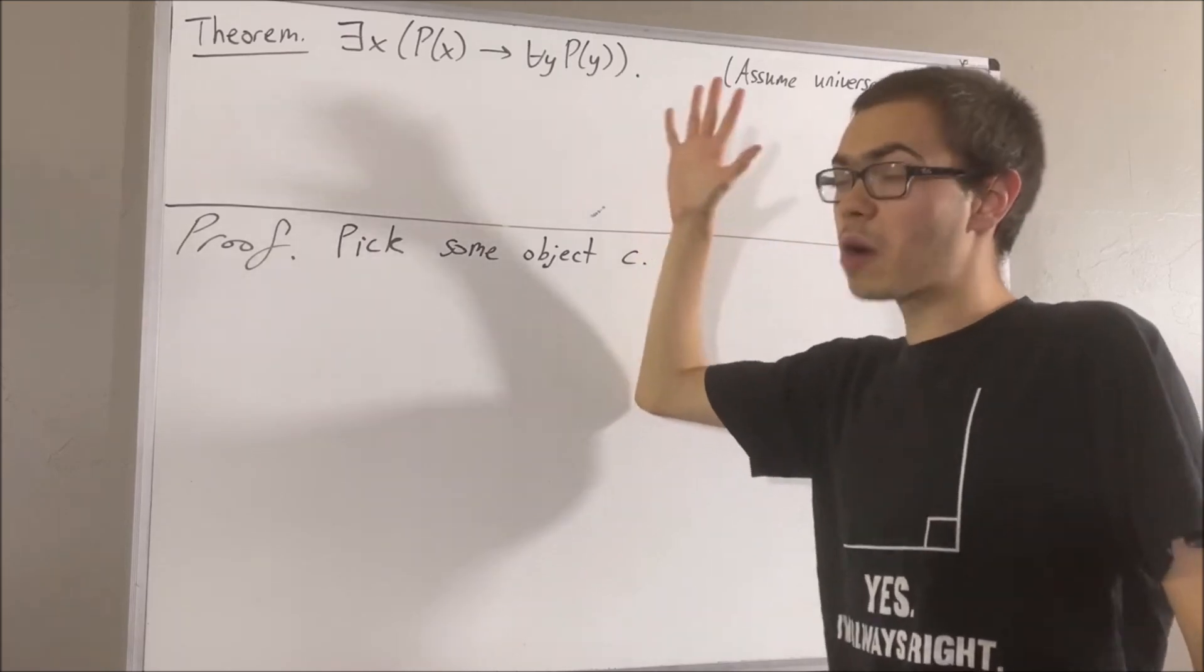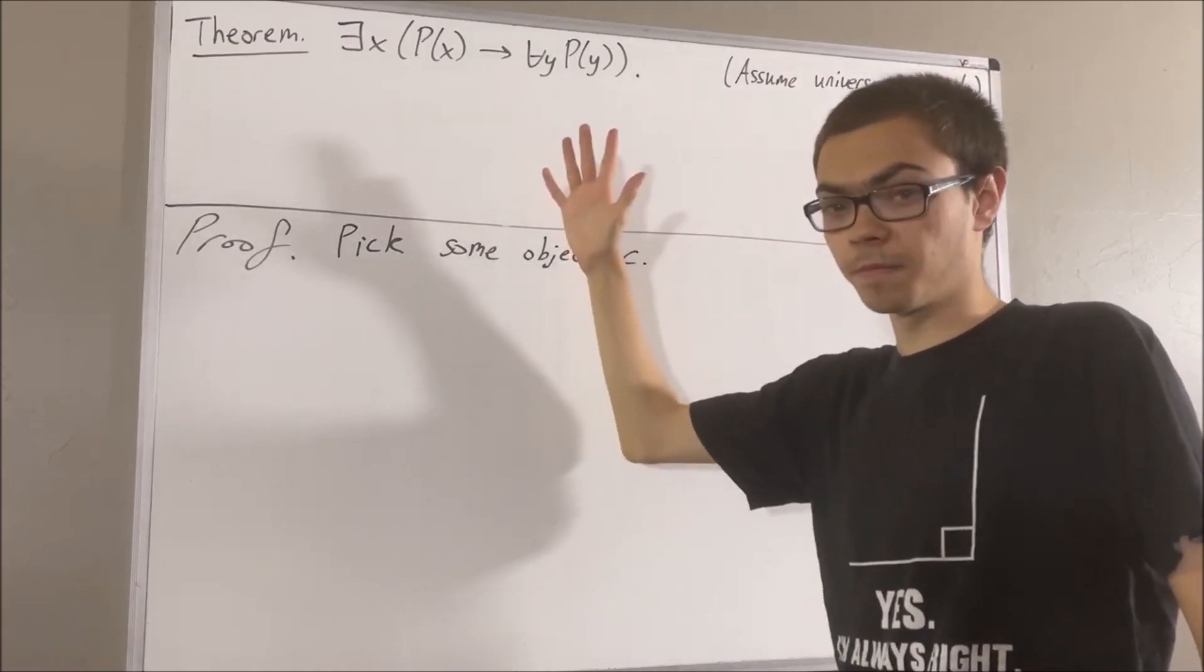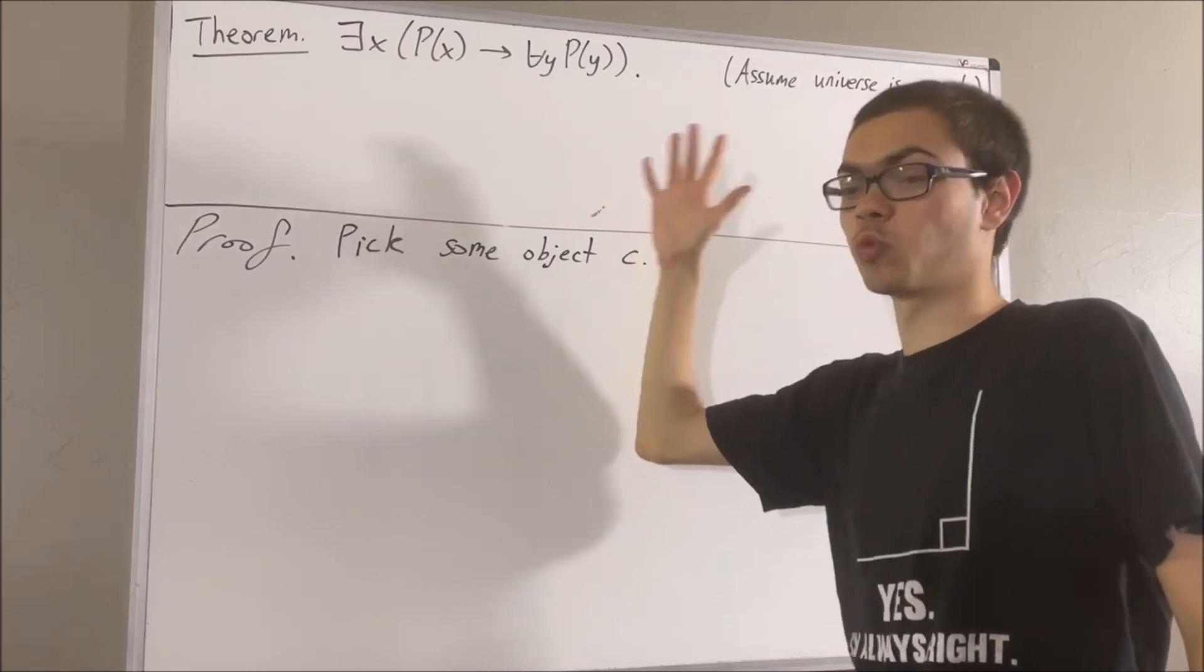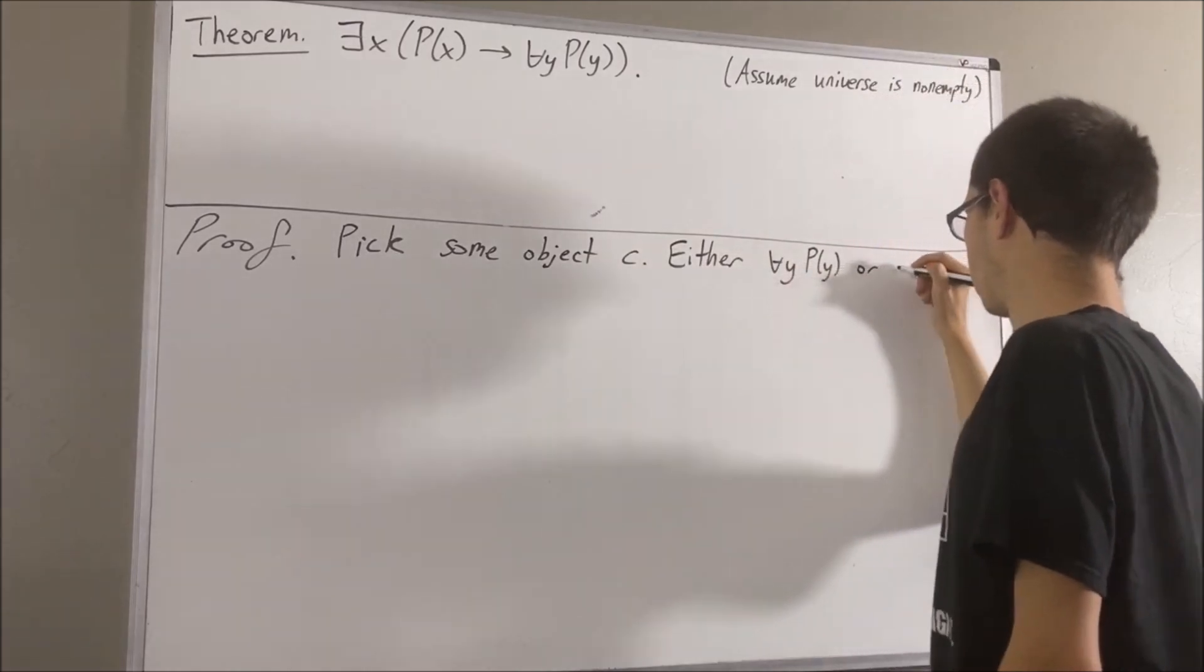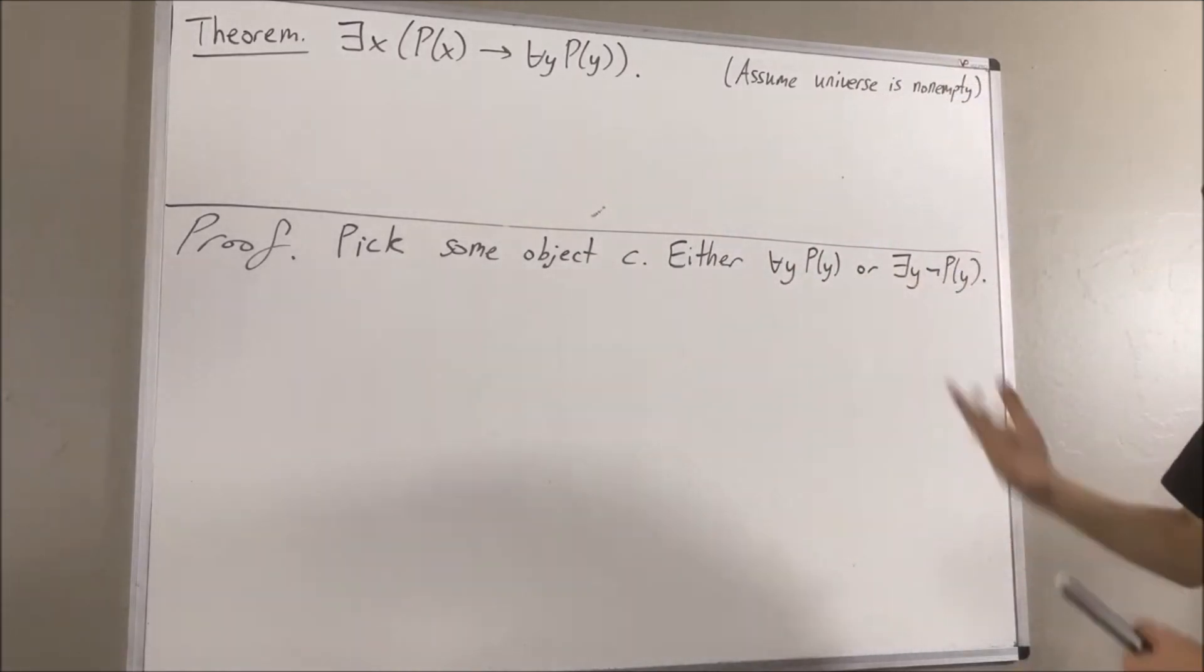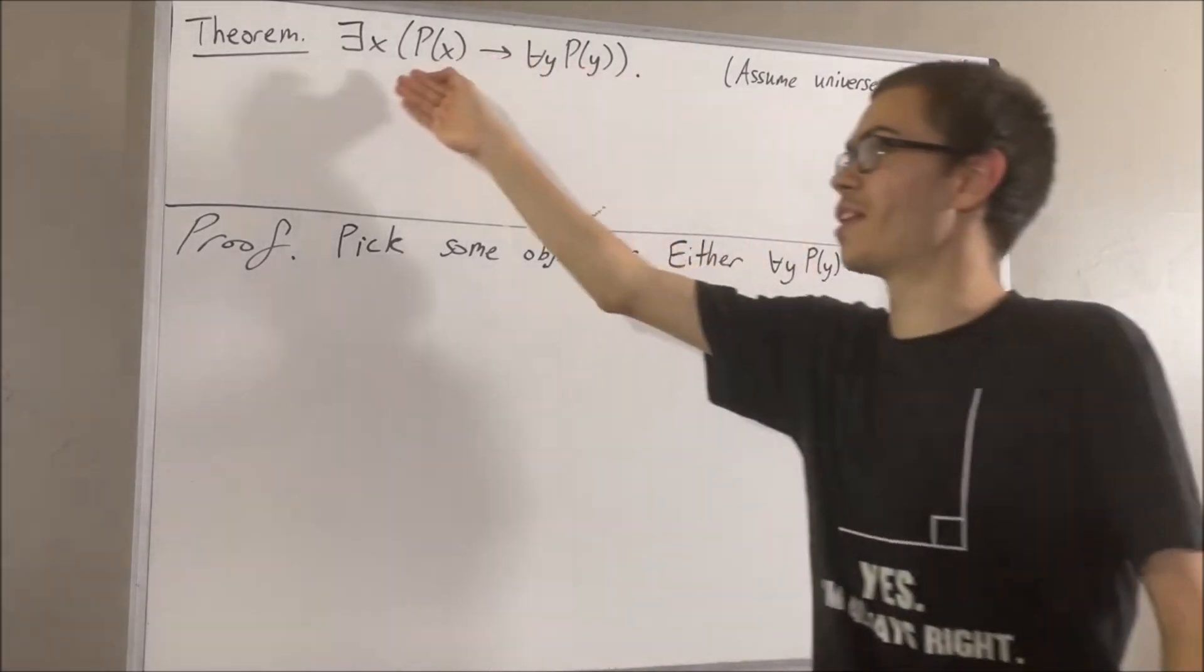Either for all objects Y, P of Y, or there exists an object Y such that not P of Y. In either case, we are going to show that this is true.